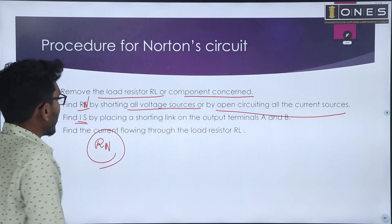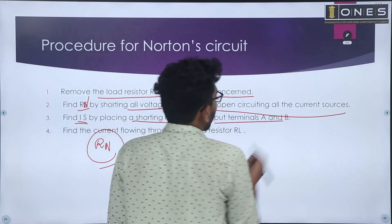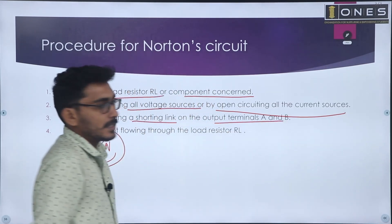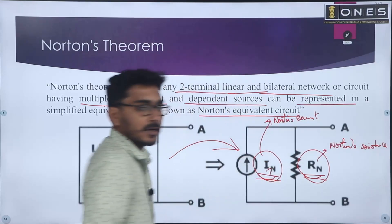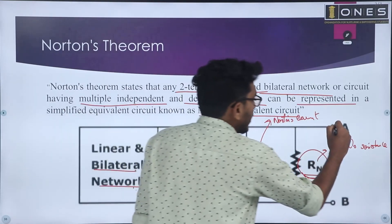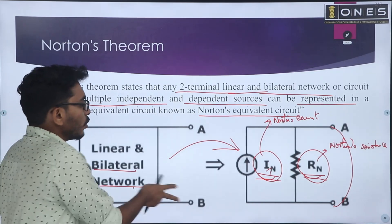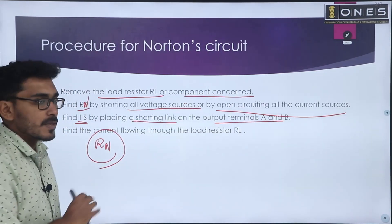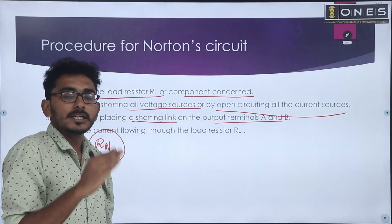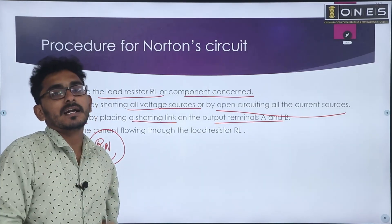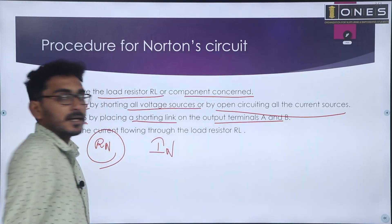Next, find IN by replacing — by shorting a link on the output terminals A and B. That is, the terminal A and B is short-circuited. We will find the current through that short-circuit element. The current that flows through the short-circuit element is calculated, and that current is called as the Norton's current, IN.